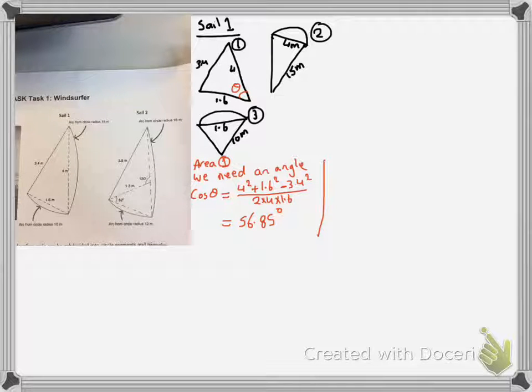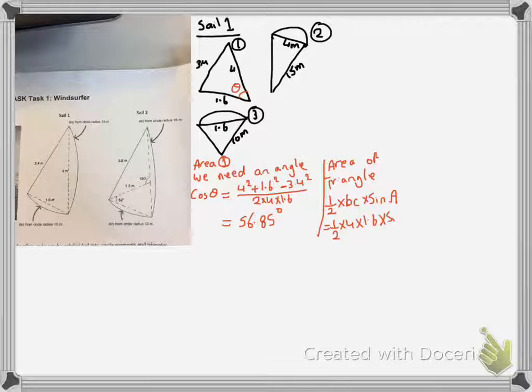Okay, now we're trying to find the area of a triangle. Now the rule for the area of the triangle is half times bc times sine a. So this is the formula: it's 1.6 times 4 times sine 56.85, and the answer is 2 meter square.